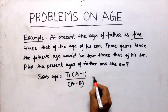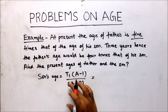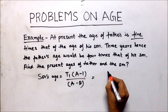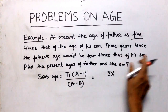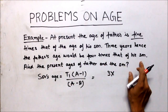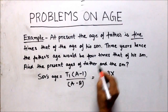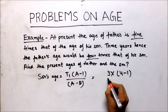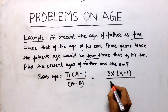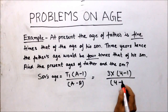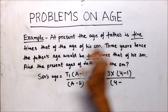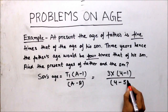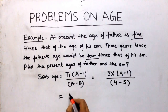Now put the values into the variables. Here T1 is 3, since '3 years hence' is given. The father's age would be 4 times that of his son, so A is 4. At present, the father's age is 5 times, so B is 5. Now solve the equation.